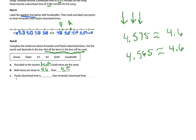The final sentence: Paula's download time is blank than Amanda's download time. Amanda's time was greater; Paula's time was smaller. Think about this — if Mr. Savage is racing against Mr. Potts, would Potts rather run a shorter time or a longer time? If I were Potts, I'd want a shorter time. So Paula's download time is shorter, which makes Paula faster. Even though the number is smaller, a shorter download time means it's faster.